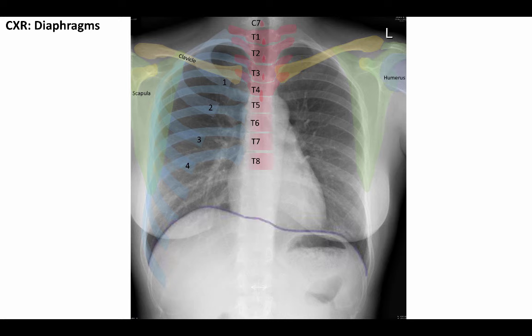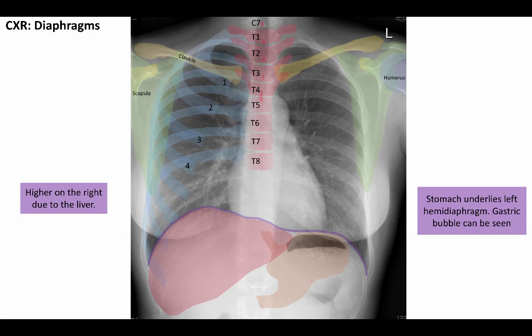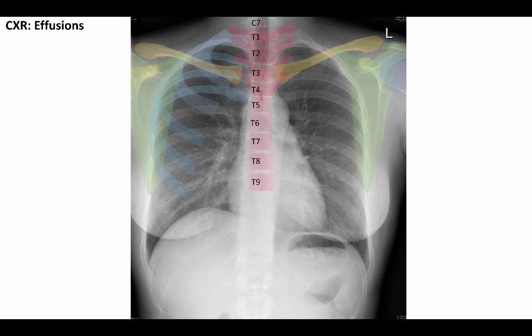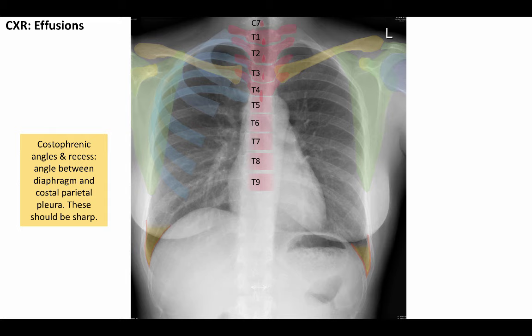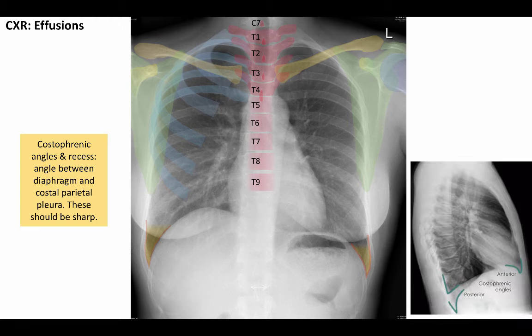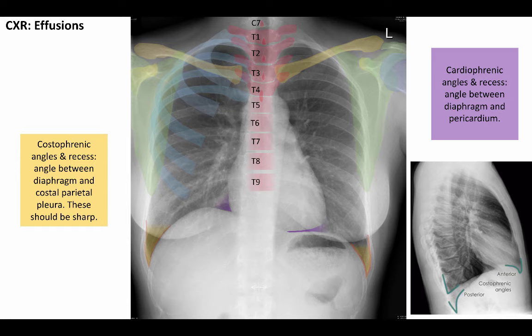Now we will examine the diaphragm. The right hemidiaphragm is higher due to the position of the liver. Under the left hemidiaphragm we can sometimes see the gastric air bubble, and through it lung tissue can be seen. This lower air bubble is gas in our intestine. Effusions can sometimes cause blunting of the costophrenic angles, which are formed between the diaphragm and the lateral thoracic wall. The cardiophrenic angles can also be seen between the diaphragm and heart, but these are usually smooth and not sharp.